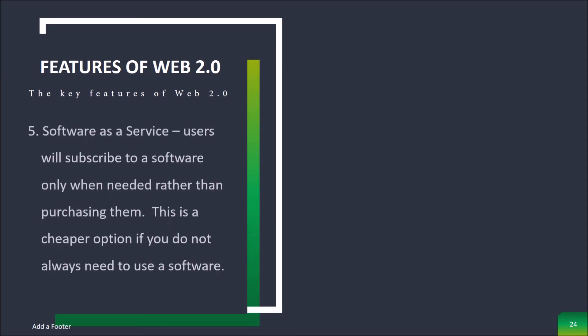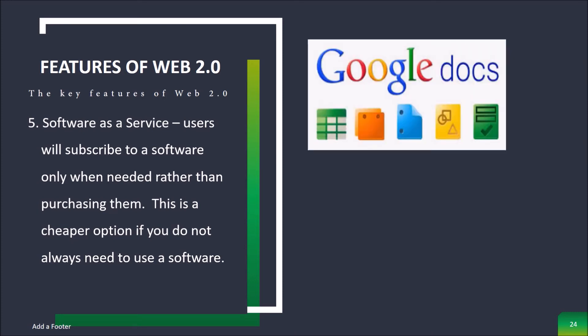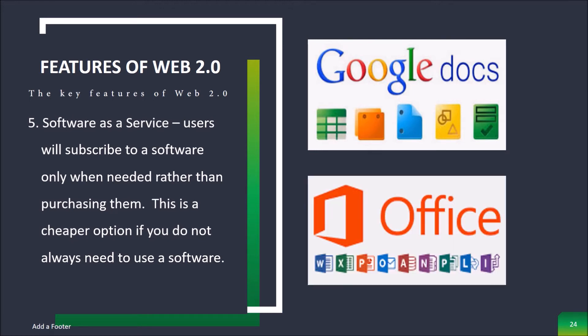Number five is Software as a Service. Users subscribe to a software only when needed rather than purchasing it outright. This is a cheaper option if you do not always need to use a particular software. For instance, Google Docs is a free web-based application that allows the user to create and edit word processing and spreadsheet documents online. Software as a service allows you to rent a software for a minimal fee.